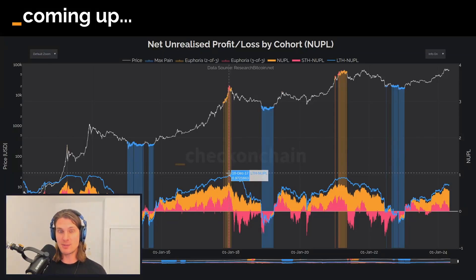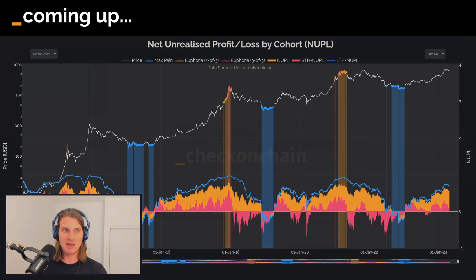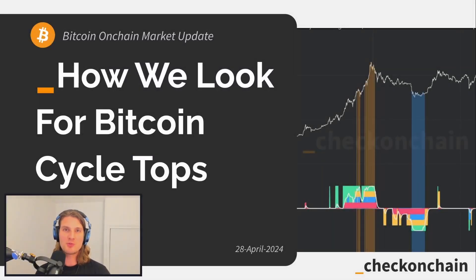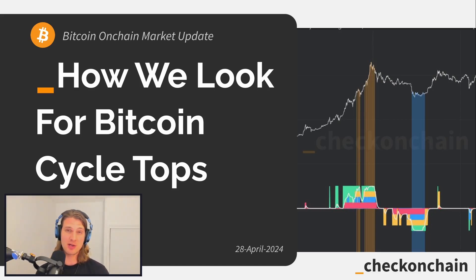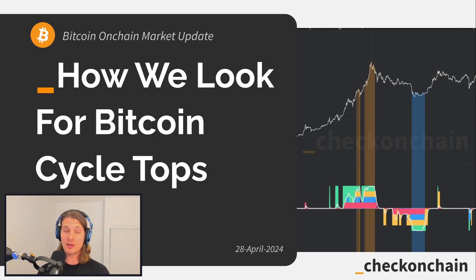What we're looking for is whether the market is really up on their position, and the higher they go up the more likely they are to start distributing, which eventually oversaturates demand. G'day folks and welcome to an on-chain update for the 28th of April. Today we're covering a topic that many people in the audience are keen to understand: how we at Check on Chain actually track Bitcoin cycle tops.